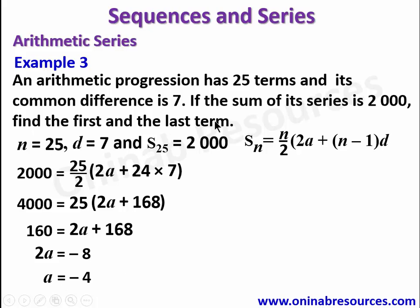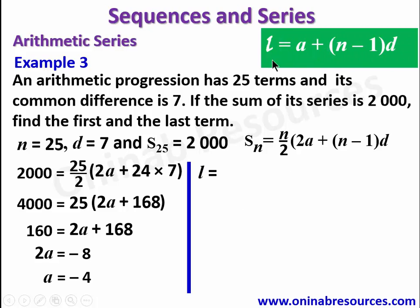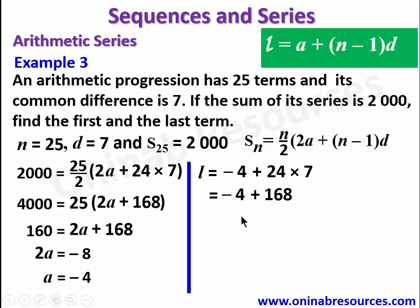Now we calculate the last term using l equals a plus n minus 1 times d. So l equals negative 4 plus 24 times 7, which gives negative 4 plus 168 equals 164. That is the last term of the arithmetic progression in example 3.